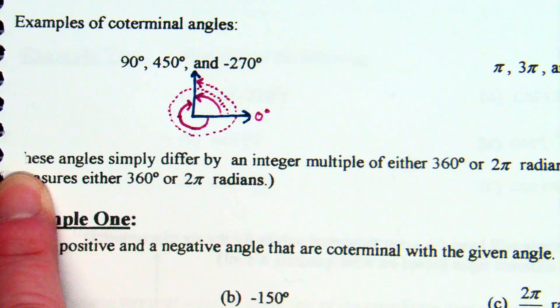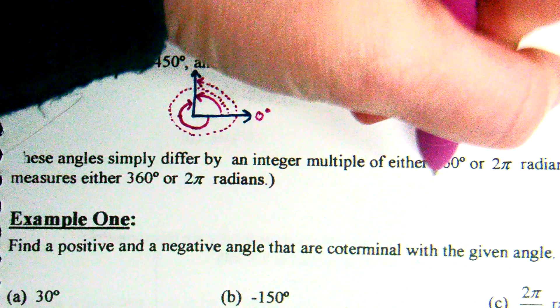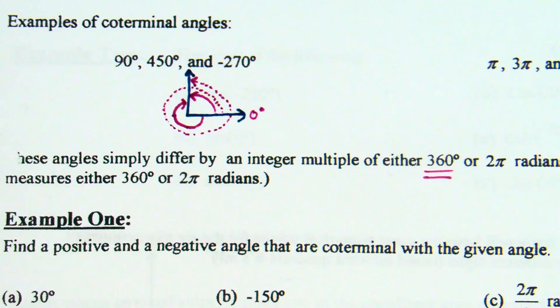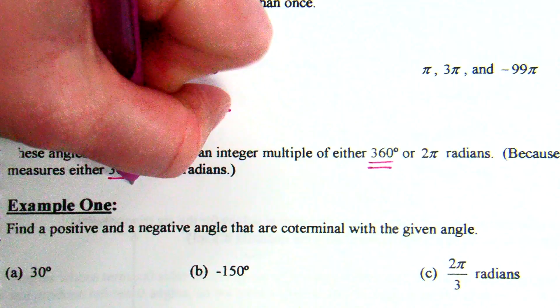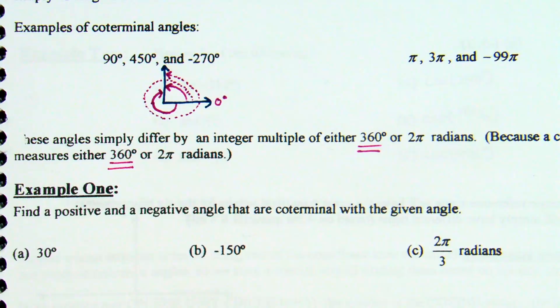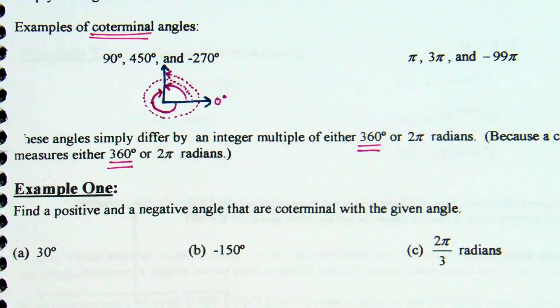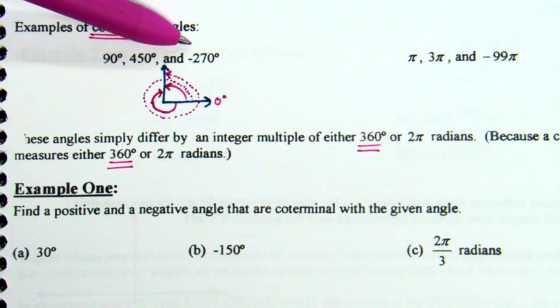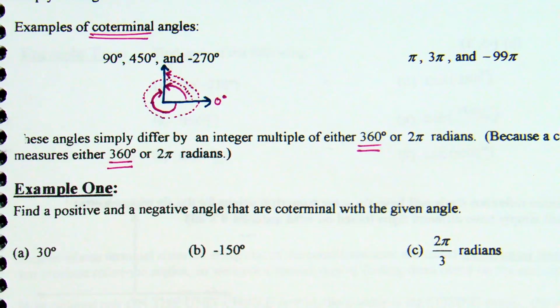Now, the comment down here is that these angles simply differ by an integer multiple of 360 degrees, because what do you know about a circle? 360 degrees. So how you can check that these are examples of coterminal angles. Take 450, subtract off 360. What do you get? 90. Take negative 270 and add 360. What do you get? 90. So by adding or subtracting 360 or multiple 360s, these are all going to be equivalent.